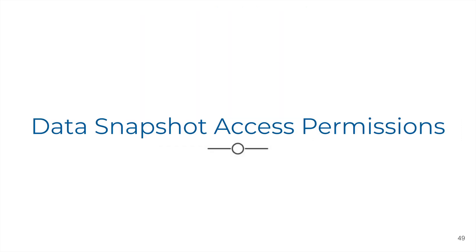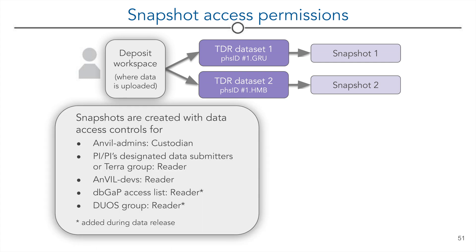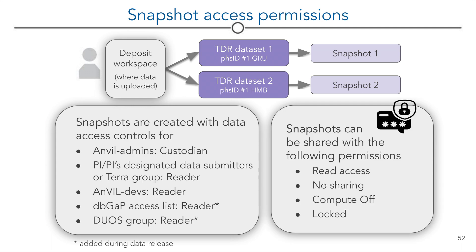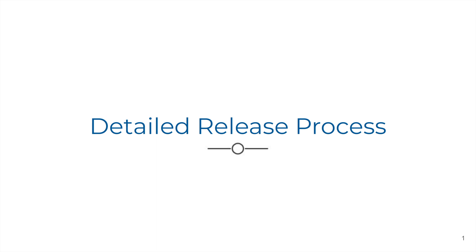Before we go step-by-step with data submission and release activities, let's go over snapshot access permissions. For purposes of permissions, datasets are divided into snapshots by FIS ID. Snapshots are created with data access controls for the following groups: Anvil admins are the custodians. PIs or the PI's designated data submitters or TIRA group are readers. Anvil developers, everyone on the dbGaP access list, and the DUOs group — which is added during the data release — are readers. Snapshots can be shared with read access, no sharing, and compute-all for lock permission. Note that data will be protected once it's shared. When a snapshot is imported to a workspace, the access permissions will be applied where the snapshot resides.